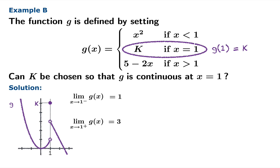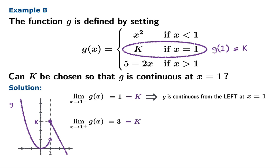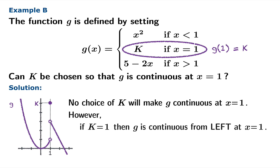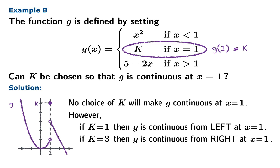So we've answered the question: the answer is no, we can't choose k to make the function continuous. But let's push beyond that simple answer and really take control of the problem. If you choose k equal to 1, you force the function value to match the limiting value from the left, so the function will be continuous from the left. Similarly, choosing k equal to 3 guarantees the function is continuous from the right. So the complete answer is: no choice of k makes g continuous at x equals 1, however if k equals 1 then g is continuous from the left, and if k equals 3 then g is continuous from the right.